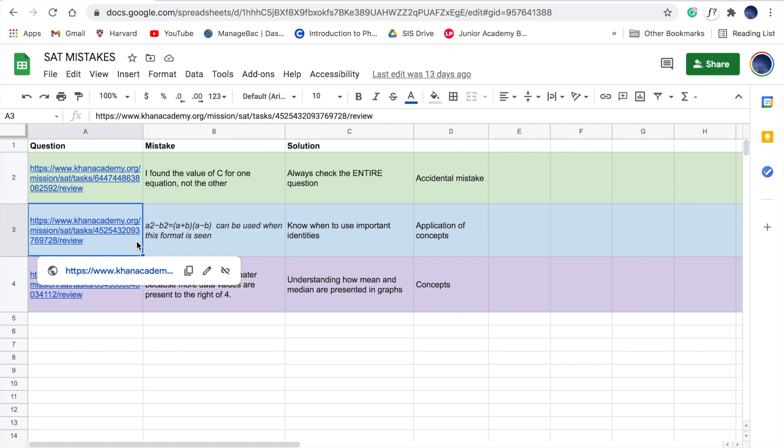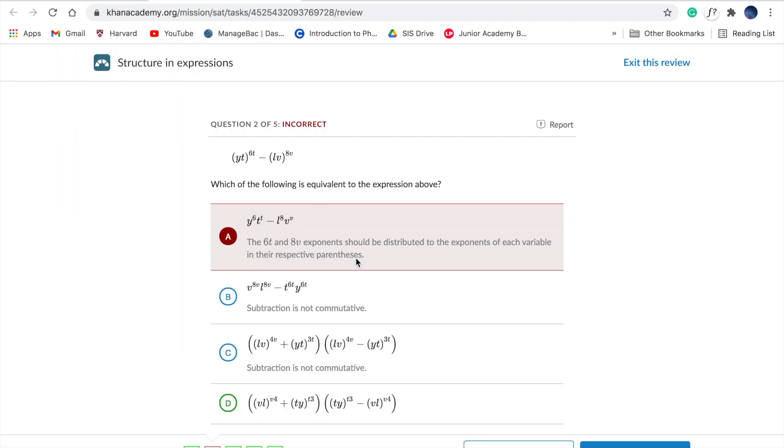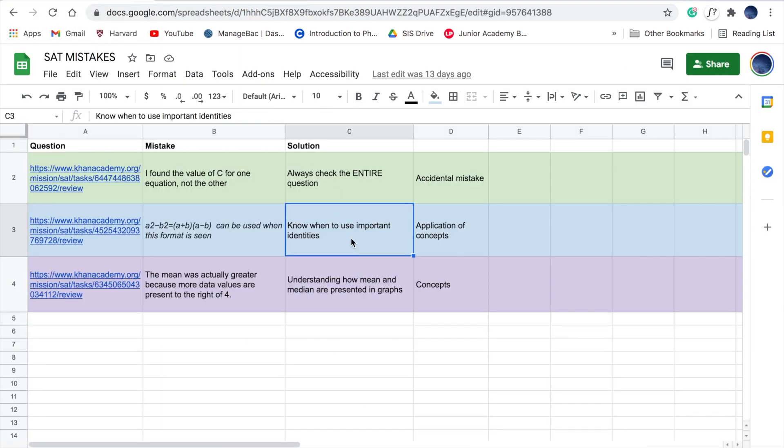Similarly, the blue color code is for mistakes in applying concepts that I already know. For example, in this question, I didn't realize that I could simply use the identity a squared minus b squared equals a plus b times a minus b to solve this, and I eventually got a wrong answer. My solution is to know when to use important identities. The moment I see an expression that's written in the form of subtraction of squares, my mind should immediately jump to using this identity.